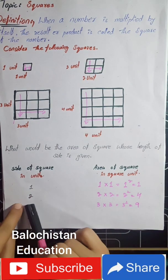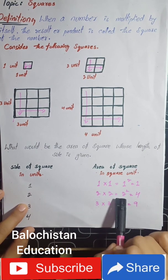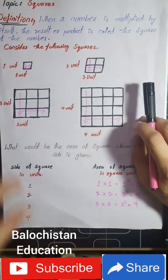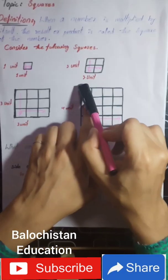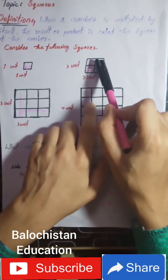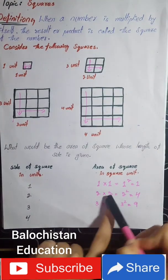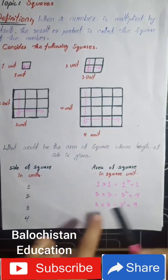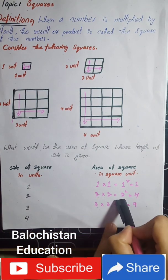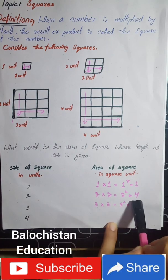For two units, we multiply two by itself: two times two equals four, which is the square of two. Looking at the shape, two units times two units gives four boxes — counting one, two on each side gives a total of four. We can also write this as two to the power of two, which equals two times two, which equals four.